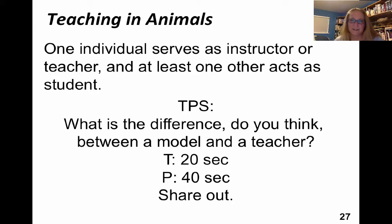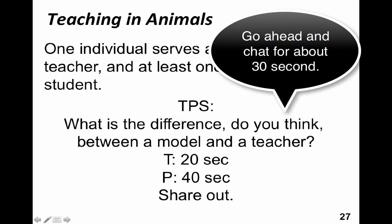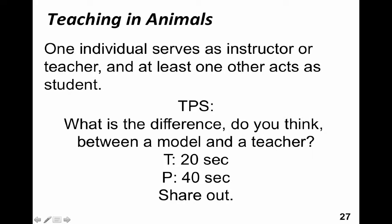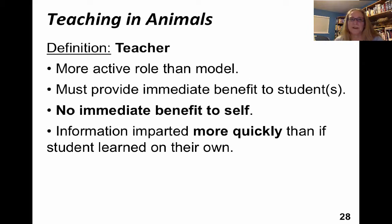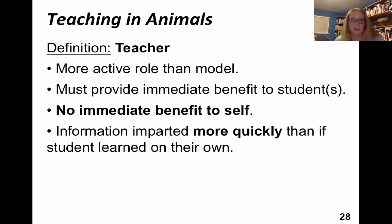Let's think about teaching in animals. We've been talking about imitating, copying, and social learning. But what about the specific case of teaching in animals, where one individual is really serving as an instructor or teacher and the other acts as a student? The teacher takes an active role and provides an immediate benefit to the students. It doesn't have any immediate benefit to themselves. Information is imparted more quickly than if the student was just learning on their own — like coming to class, you learn things you could have learned from a textbook, but you grasp them more quickly with a good teacher. The teacher doesn't receive an immediate benefit necessarily.